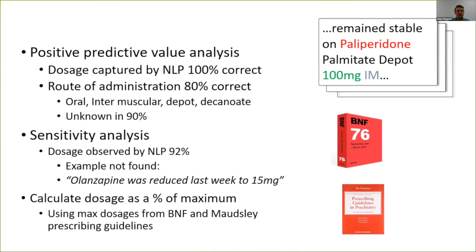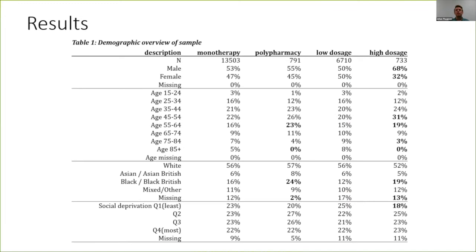We calculated dosage as a percentage of the maximum recommended using prescribing guidelines from the BNF and MAUDSLEY. Doing that, we can stratify our sample into patients who received only monotherapy, patients who at some point received polypharmacy of antipsychotic medication — here defined as a period of 30 days or longer — and patients who received only low dosage, defined as 75% of the maximum recommended, or patients who received high dosage of 100% or more.